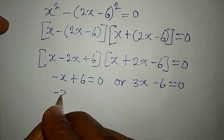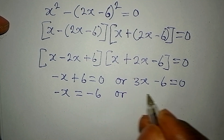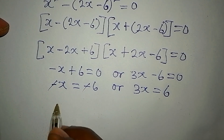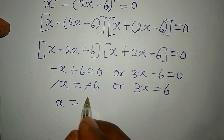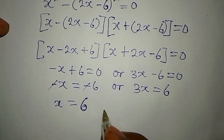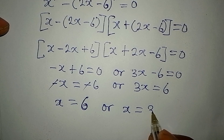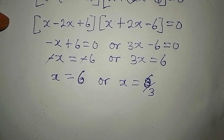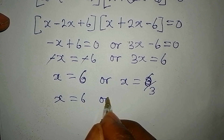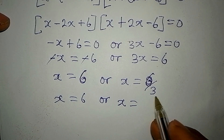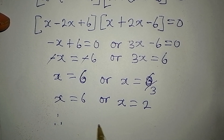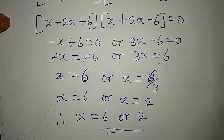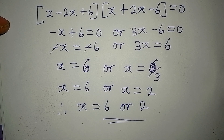From the first bracket we have minus x equals negative 6, so x equals 6. From the second bracket, 3x equals 6, so x equals 6 divided by 3, which is 2. Therefore x equals 6 or x equals 2. Both are positive, so let's confirm whether both satisfy the original equation.